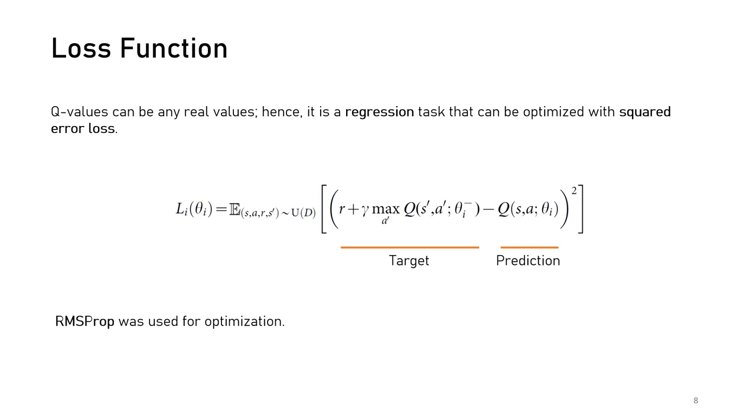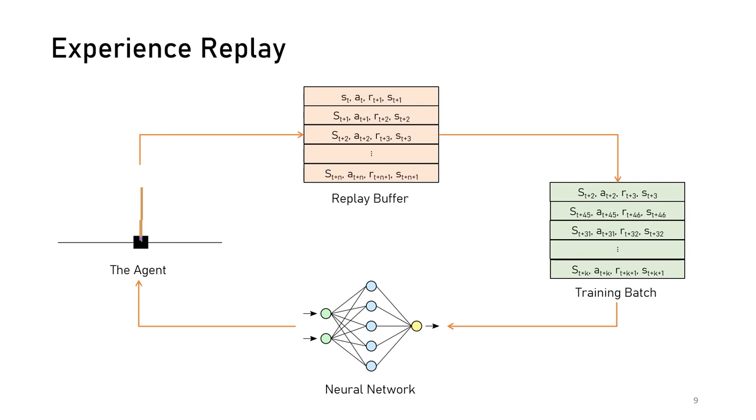This task can be considered a regression problem since action values are real numbers. Hence, they used squared error loss and RMSprop for optimization. In the equation, there are two Q functions which will be discussed in a future slide in detail.